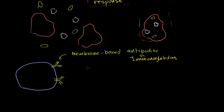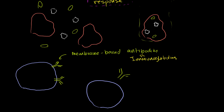B cells have these antibodies on the surface of their membranes — they're membrane-bound. Usually when people talk about antibodies, they're talking about free antibodies floating around. Now, what's really interesting about these membrane-bound antibodies is that each B cell has one type of membrane-bound antibody on it. A different B cell will have different antibodies.